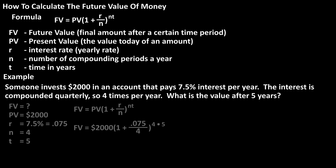Using the formula, we have future value equals $2,000 times the quantity 1 plus .075 — the decimal value of the yearly rate of 7.5% — divided by 4, raised to 4 times 5.